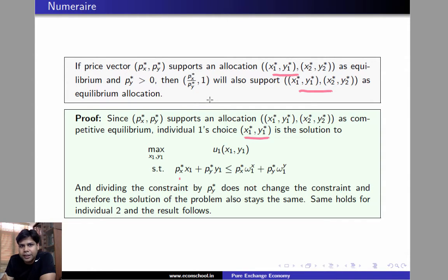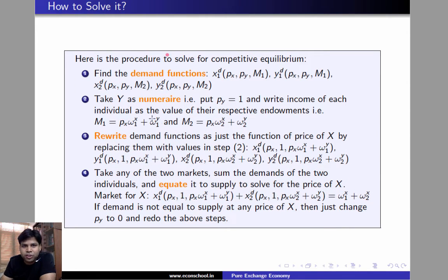Therefore, dividing the price vector by a positive constant, in this case PY star, doesn't change the equilibrium. The immediate consequence of these two results is the following procedure for solving for competitive equilibrium.